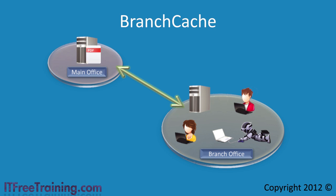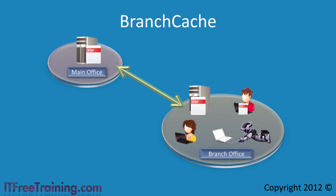Branch Cache works by caching files on the local network after they have been copied over the wide area network. If another computer requests a file that has been cached, the file is copied over the local area network rather than the wide area network. This helps reduce the amount of traffic traveling over your wide area networks.